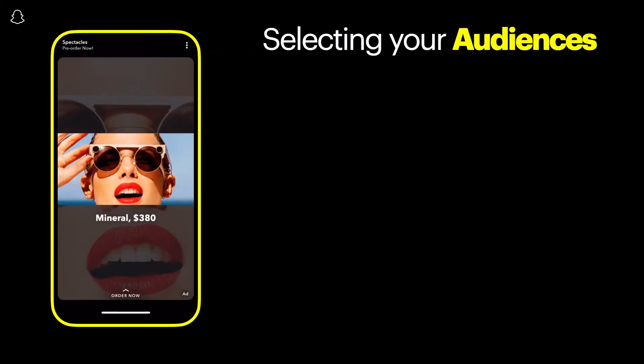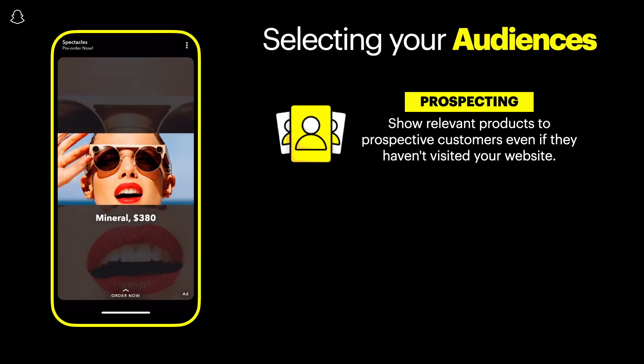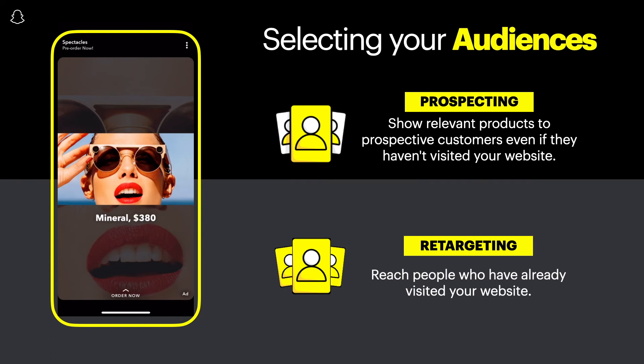There are two audience targeting options for Dynamic Ads. With Prospecting, you can reach Snapchatters who are likely to be interested in your products, even if they haven't visited your website. With Retargeting, you can reach people who have already visited your website but haven't yet purchased.